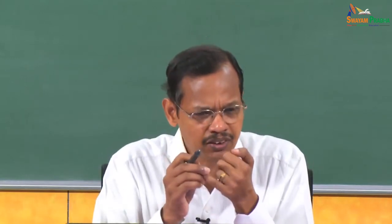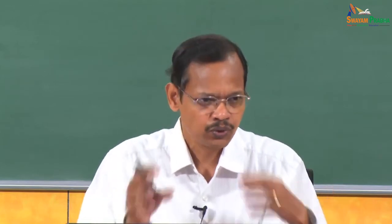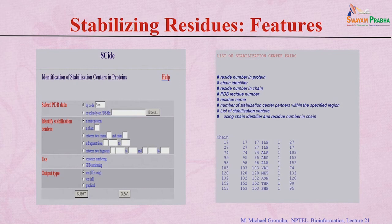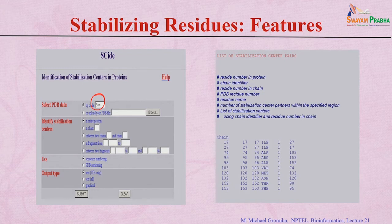Stabilization center is another property, also derived from long range interactions. Two residues are part of a stabilization center if they are involved in long range interactions and belong to clusters of residues that are at least 10 residues apart yet interact with each other. You can use the server SCIDE to identify stabilization centers — provide the PDB code or upload your PDB file, specify the chain. For example, residue 17 and residue 27 form a stabilization center because they have several interacting residues in the cluster.